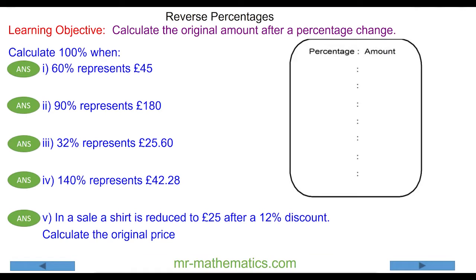Hello, in this lesson we're going to calculate the original amount after a percentage change. The original amount will always be 100%. We begin with question one where 60% has an amount of £45.